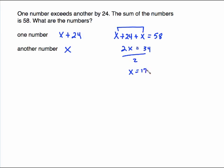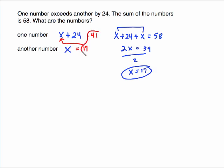Don't stop there because it says what are the numbers. If x is 17, go back to where we named our variables: x is 17. Plug 17 in for that x — 17 plus 24 is 41. And you can check that very easily: 41 plus 17 gives us 58.